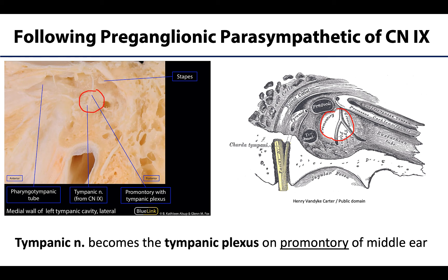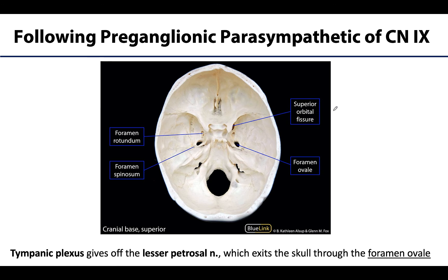After being part of the tympanic plexus for a short while, those preganglionic parasympathetic fibers coalesce and join back together to form the lesser petrosal nerve, which will exit the skull via the foramen ovale.